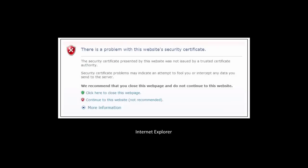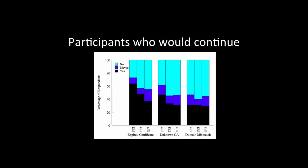Their survey provided some interesting results. They looked at three different types of errors that could cause an invalid security certificate: having an expired certificate, having an unknown certificate authority, or having a domain mismatch where the certificate is for a different domain than the site the user is trying to access. They showed these errors along with how they would appear in each of the three different browsers, and asked whether or not people would continue to the site. The table shows the percentage of respondents who said they would continue, would not continue, or maybe would. For an expired certificate, many more people said they would continue. In all cases, people seeing the Firefox 2 error proceeded more. Still, we see 30-40% of people saying they would continue even when they see these SSL errors.